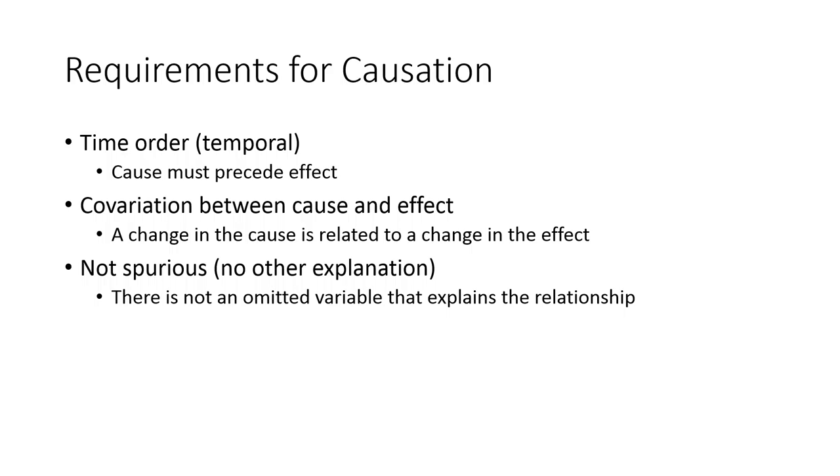If we're looking to establish causation, we have to find a situation in which we can remove those other explanations. We can say that the only reason that there is a relationship between A and B is because A is causing B. And we'll think more about ways in which to go about doing this and ways in which research designs can help establish the non-spuriousness of a relationship.